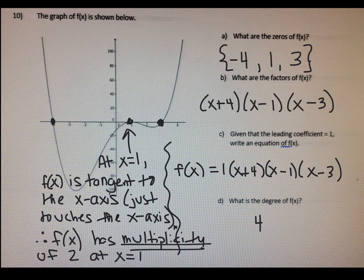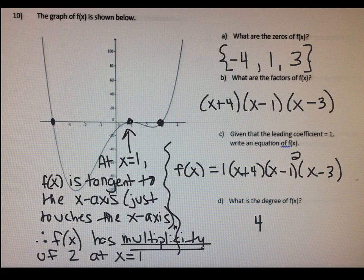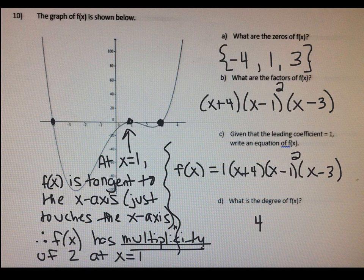So now to go back to letter c: since there's multiplicity of two at x equals one, on this factor of x minus one, we are going to need to put a little square — that means there are two of them. When I go back up to letter b, what are the factors of f of x — let's also put a little square on that. So to sum it up: whenever your graph bounces off the x-axis, you only write that root once, but for the factors and when you write your equation, you need to put that square there because it has multiplicity of two.